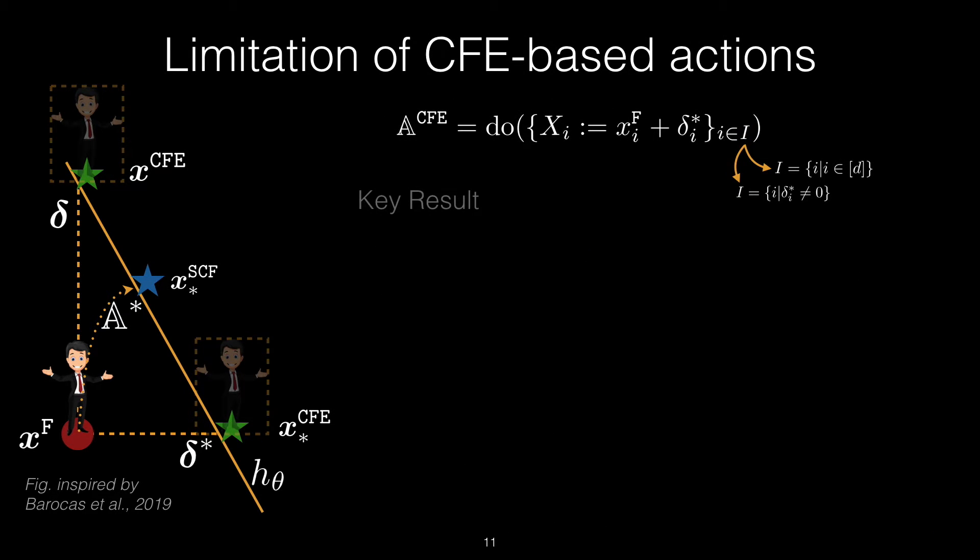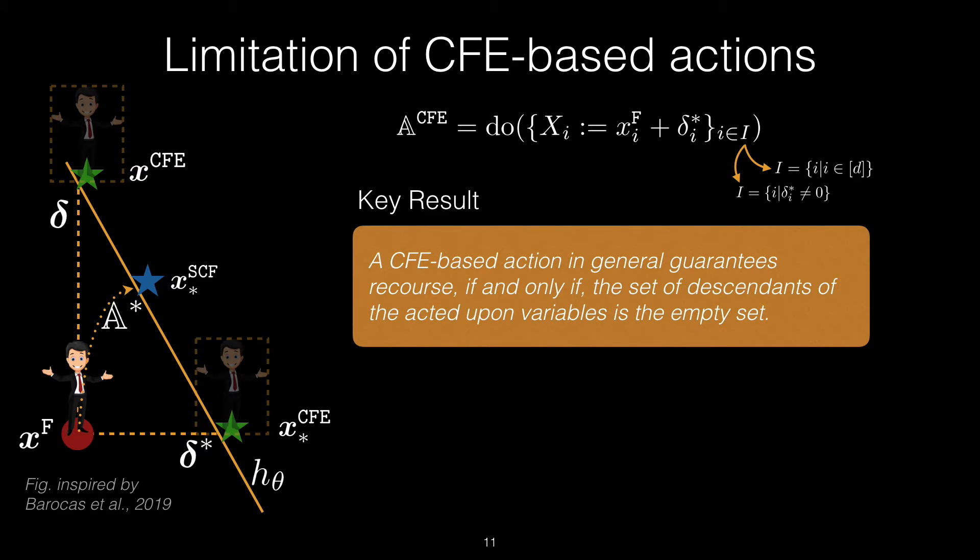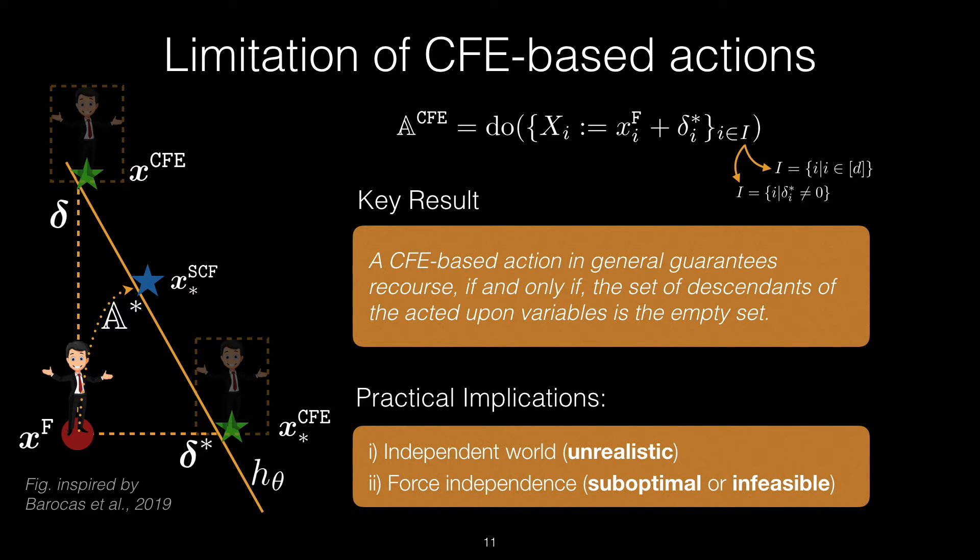Now, this example provides the insight for the following key result in our work, which is that counterfactual-based actions, as we see on the top, in general guarantee recourse if and only if the set of descendants of the acted-upon variables is the empty set. In practice, this translates to the fact that counterfactual explanations only guarantee recourse if and only if the features are independent of each other, which is an unrealistic assumption and does not hold in general settings, as we saw earlier. Alternatively, the individual may also intervene on the descendants of the intervened-upon variables so that they can keep their factual value regardless of the counterfactual value of their parents.